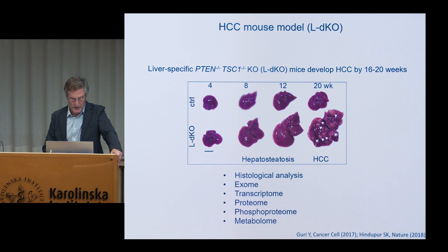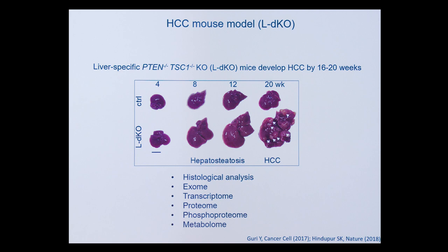So what did we see in this mouse? Deletion of these two tumor suppressors occurs at birth, and at four weeks of age we see hepatomegaly — enlarged liver — which continues throughout the lifetime of this mouse, due to the growth-inducing aspect of hyperactive TOR signaling. The hepatocytes in these livers are bigger and the liver itself gets bigger. By about eight weeks we start seeing non-alcoholic fatty liver disease, or hepatosteatosis, which then progresses to an inflamed liver. By about 16 weeks we start seeing very mild forms of hepatocellular carcinoma, and by 20 weeks there is very severe liver cancer in these mice, and the mice have to be sacrificed.